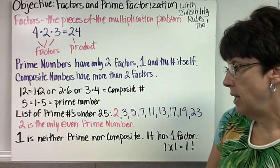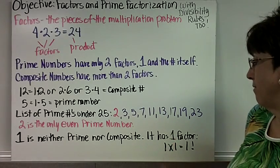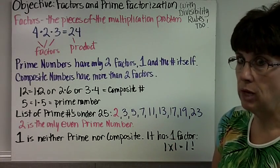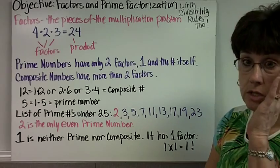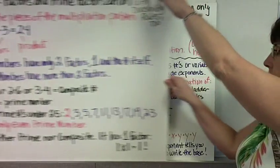The number 1 is neither prime nor composite because it only has one factor, 1. 1 times 1 is 1, they aren't two different digits. So don't include 1 as a prime number.